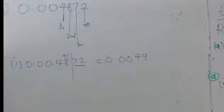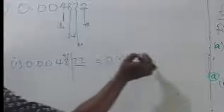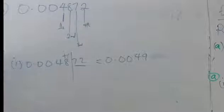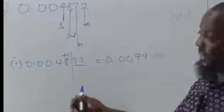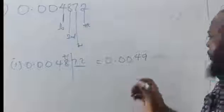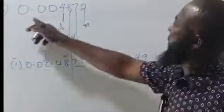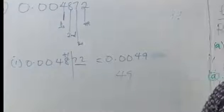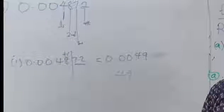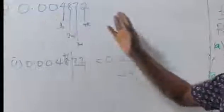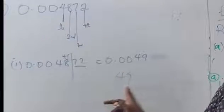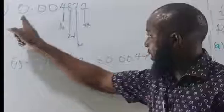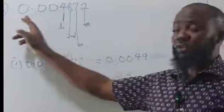Note that if you fail to include the leading zeros, you'd get just 49 — but that is not the same as 0.004872 or 0.0049. We are approximating that 0.004872 is equivalent to 0.0049, not 49. The leading zeros must be kept because this number is less than 1.